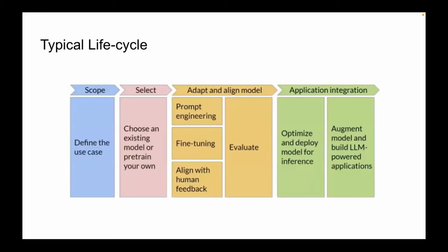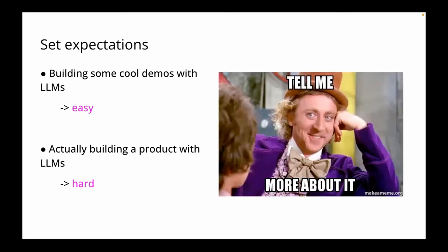This is the typical life cycle of a generative AI project. First you define the use case. Then you think: should I take an existing model or pre-train my own? Typically pre-training your own is always costlier. You should always start with prompt engineering and then move gradually to fine-tuning and aligning with your values. You need to evaluate those models because they can hallucinate and are very convincing liars. Then for application integration, you think about inference optimization, cost, and other factors. Building cool demos with LLMs is really easy, but actually building an end-to-end product is really hard.